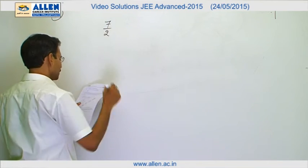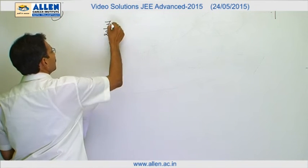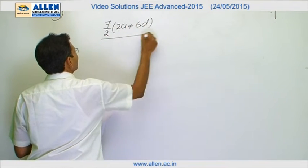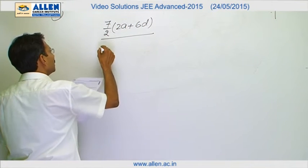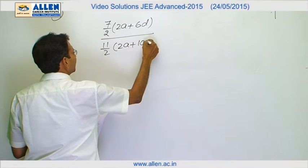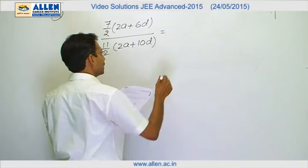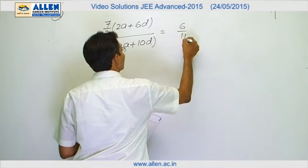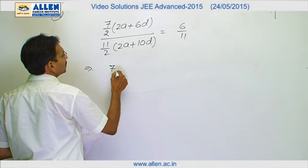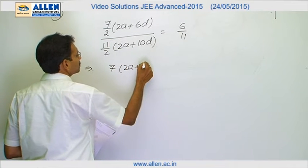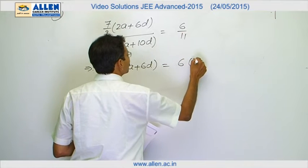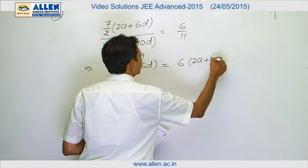The sum of 7 terms is 7 by 2, 2a plus 6d, divided by 11 by 2, 2a plus 10d. This is given as 6 by 11. Cancel half, we cancel 11.